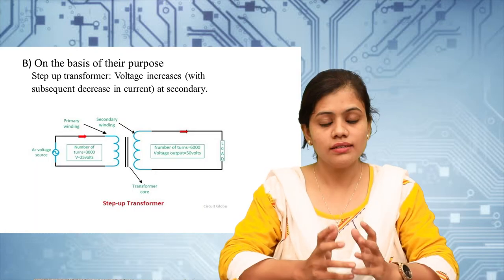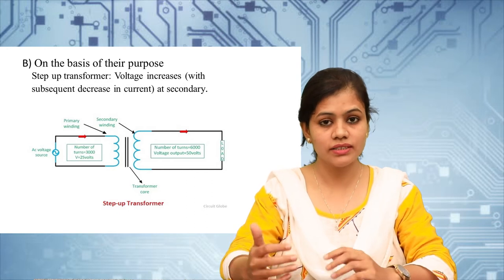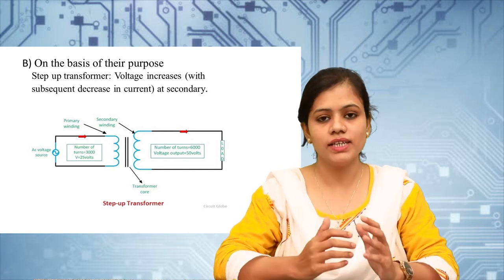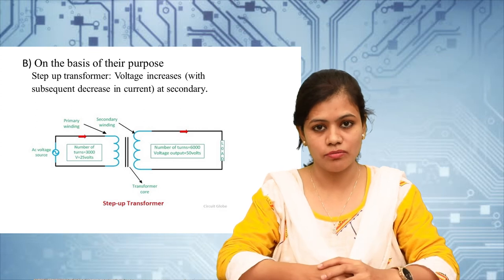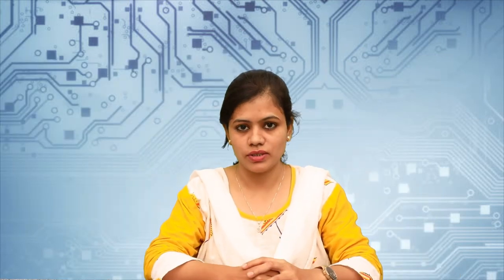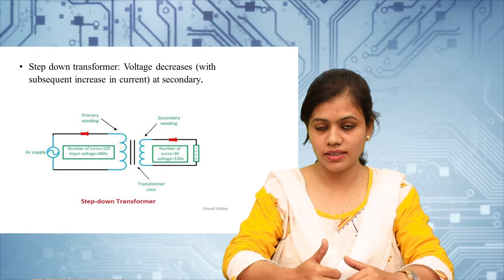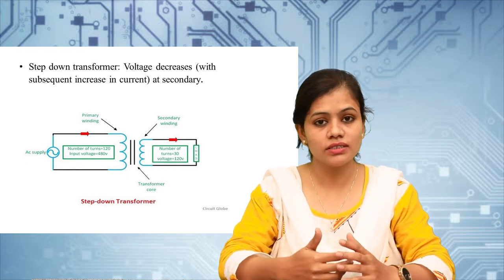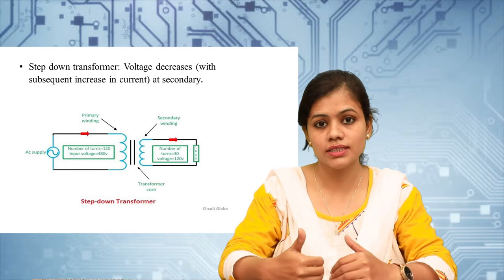According to turns ratio, there are two types of transformer: step-up transformer and step-down transformer. In a step-up transformer, the transformer is designed to increase the voltage from primary to secondary — the number of turns in the secondary winding is more than the primary winding. In a step-down transformer, the transformer is designed to decrease the voltage from primary to secondary — the number of turns on the secondary side is less than that of the primary winding.